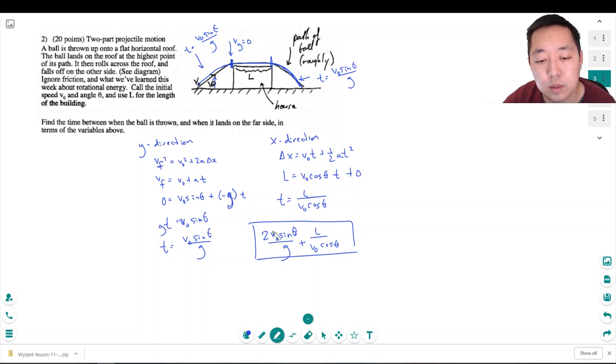Do I have the units right? Let's see. Meters per second, meters per second squared, so this is in seconds. This is meters, meters per second, this is also in seconds. So good.